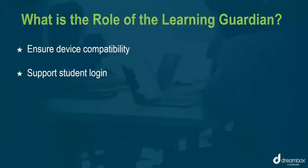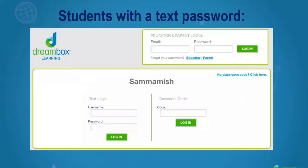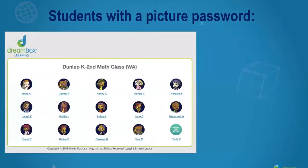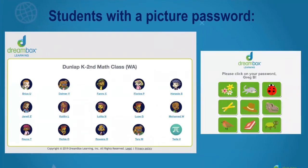The second expectation of the Learning Guardian is to support your child's login. This is the view for the student with a text password. A customized school web browser link should have been sent from your child's teacher. Please note, support for usernames, passwords, and classroom codes must come from your child's teacher. Students with a picture password are shown above, and students are able to select the picture password of their choice upon login.